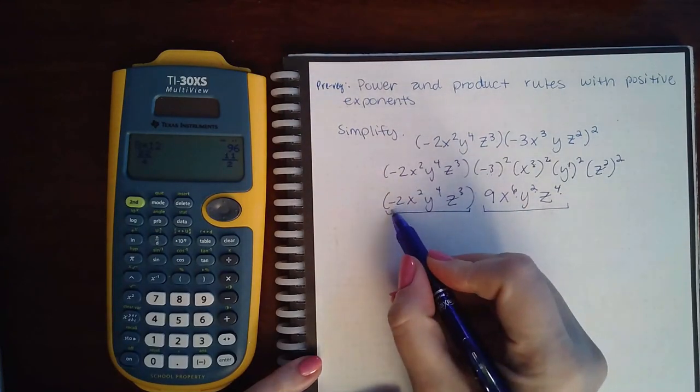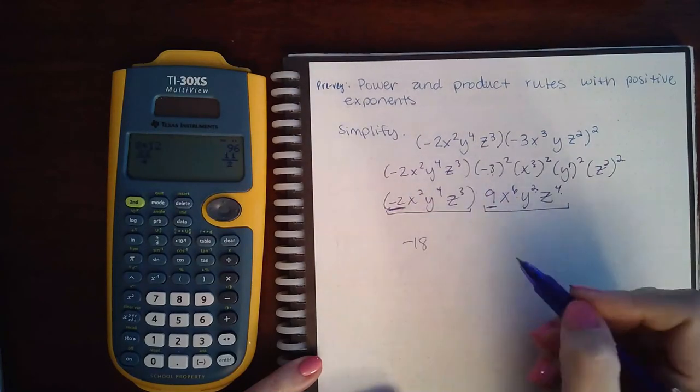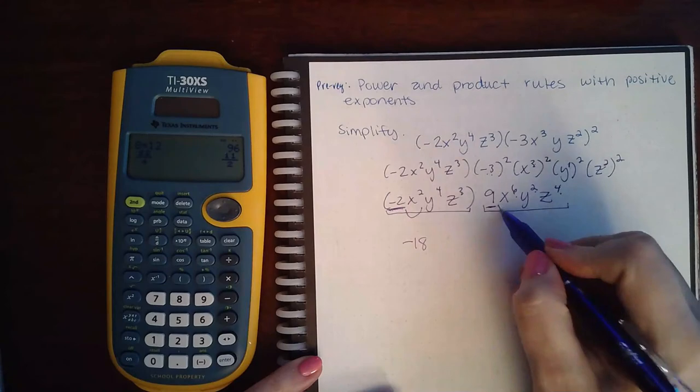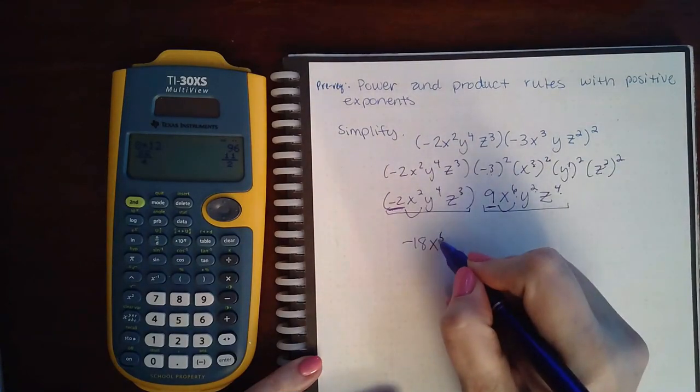So I'm gonna take the numbers first, negative two times nine, which is negative eighteen. Then I'm gonna take the X's, X squared times X to the sixth. You add the exponents, so you get X to the eighth.